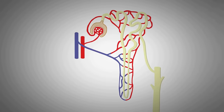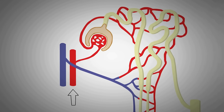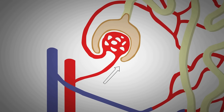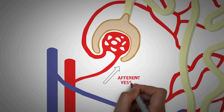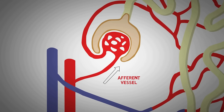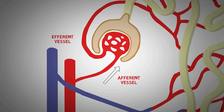The blood enters the kidney via the renal artery, which is a large artery and a branch of the aorta. After entering the kidney, the renal artery gets divided into many small divisions until it reaches the smallest one that enters the nephron — the afferent vessel — which brings blood into the glomerulus. The efferent blood vessel takes blood out of the glomerulus.